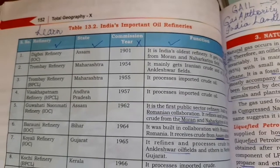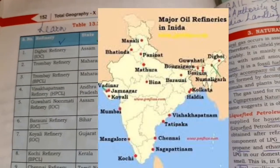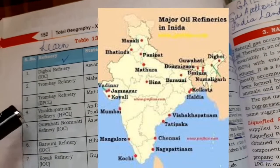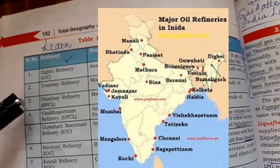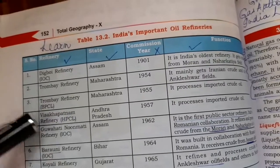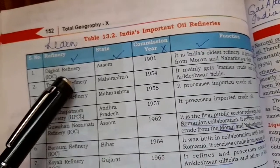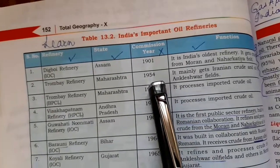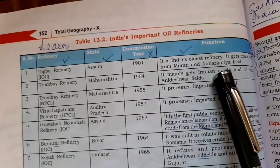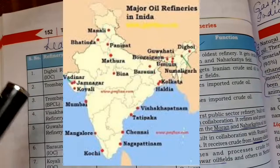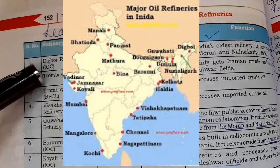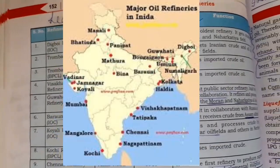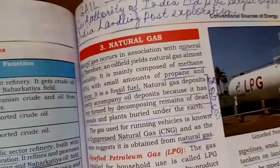There is a table on page number 152 which gives information about oil refineries in our country. From this table, we have to learn the name of the refinery, the state where it is located, and the functions. The commission year is not required. We also do not need to learn the names of organizations like IOC — just learn all the names of the refineries.